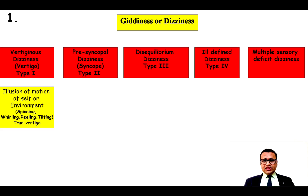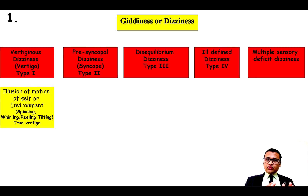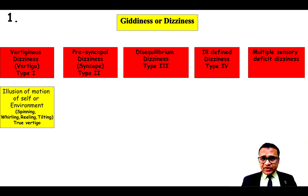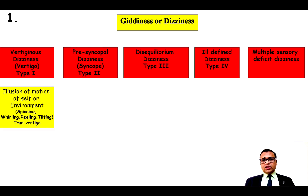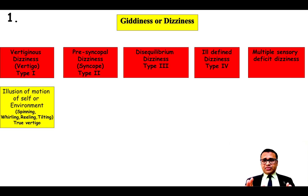In Type 1 dizziness, the patient feels a spinning sensation or reeling sensation — the illusion of motion of self or environment. If the patient feels the illusion of motion of self, it is called subjective vertigo. If it is an illusion of motion of the environment, it is called objective vertigo. Subjective vertigo could be central or peripheral, while objective vertigo is usually peripheral.